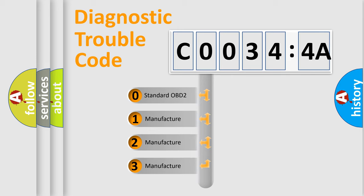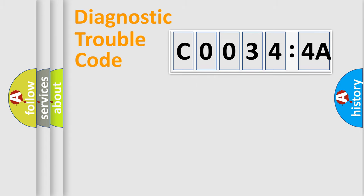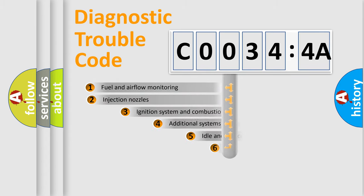If the second character is expressed as zero, it is a standardized error. In the case of numbers 1, 2, or 3, it is a manufacturer-specific expression of the car-specific error.